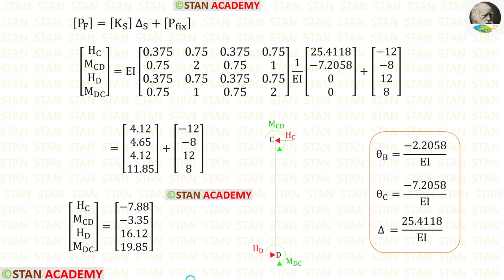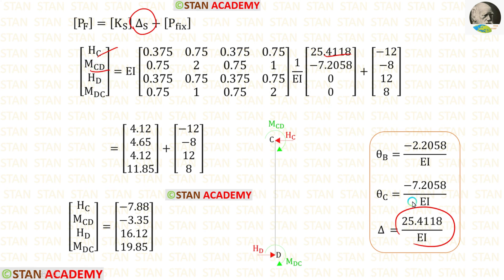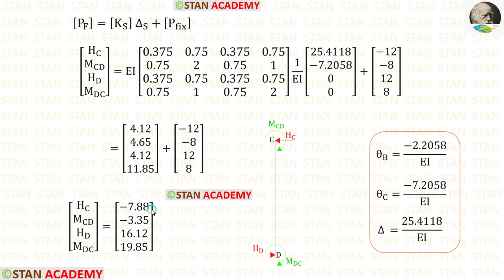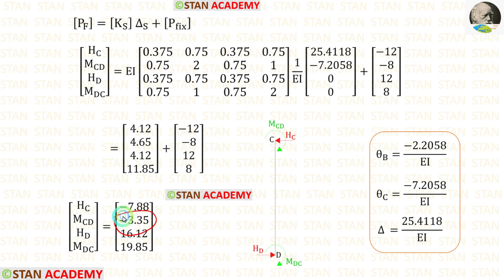Now let us find the final moments and reactions in column CD. Using the element stiffness matrix, we apply the value of delta for H_C and the value of theta_C for M_CD, and include the fixed end moments and reactions. After calculation, we obtain the reactions and moments. H_C has a negative value meaning it acts towards the right side, and M_CD has a negative value meaning it acts in the anti-clockwise direction.